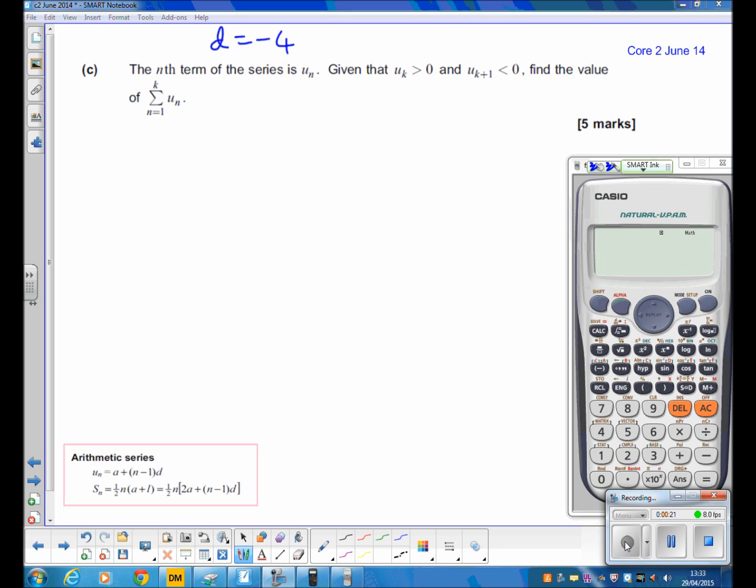What's this basically saying? It wants us to find the sum of the series un, from the first term (that's what the 1 at the bottom means) to the kth term. But the problem is we don't yet know what k is, which is why they've given us this information. They're saying the kth term is greater than 0.